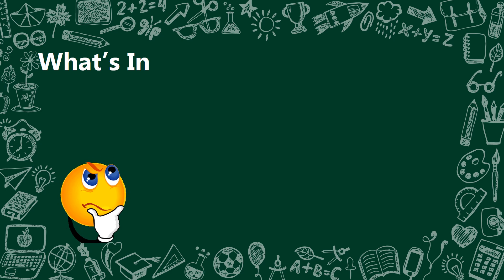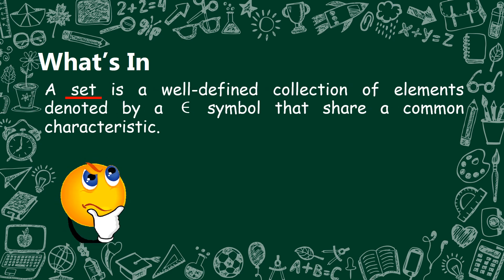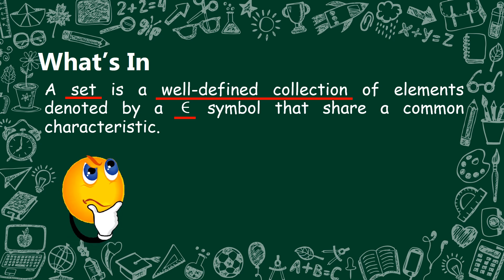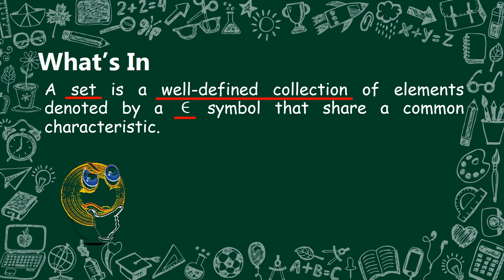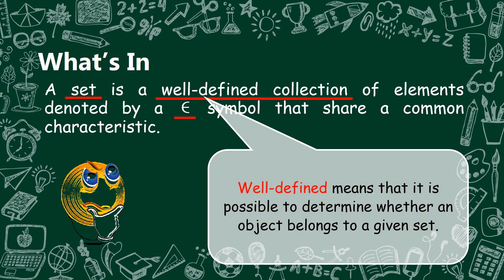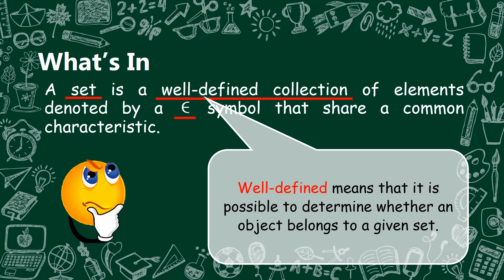What's in? A set is a well-defined collection of elements, denoted by this symbol, that can share common characteristics. Remember, this is the symbol we will use for elements. When we say well-defined, it means that it is possible to determine whether an object belongs to a given set — it must have an exact and complete definition or description.